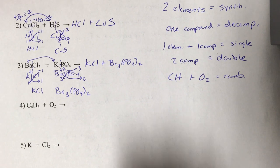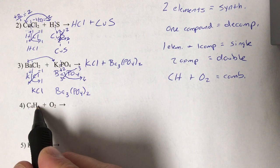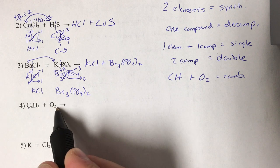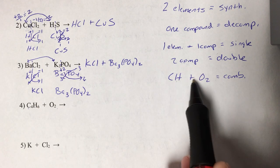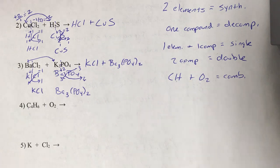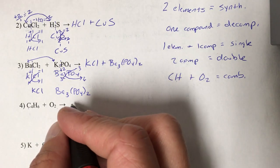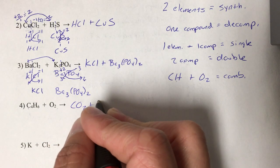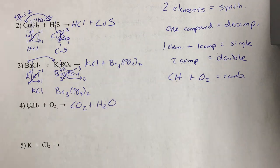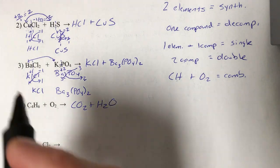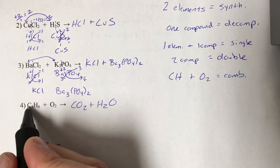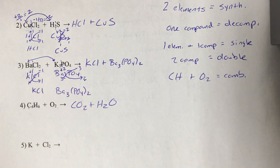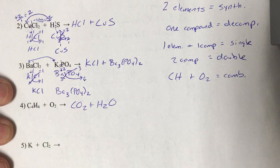In the next one we have C-something, H-something plus O2 — that's combustion again. Whenever it's combustion, write down your carbon dioxide and your water, call it a day, and move on to the next. C-something, H-something plus O2 is how you know it's a combustion reaction.